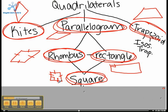A kite is always a quadrilateral because the lines go up. A parallelogram is always a quadrilateral because the lines go up. A trapezoid is always a quadrilateral because the lines go up. A rhombus is always a parallelogram because the lines go up. And it is also a quadrilateral because the lines go up.